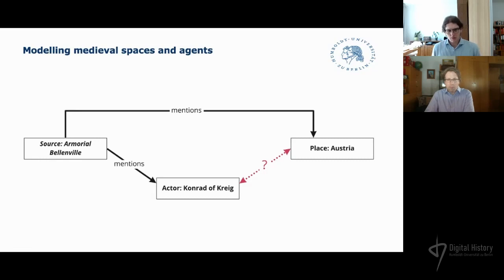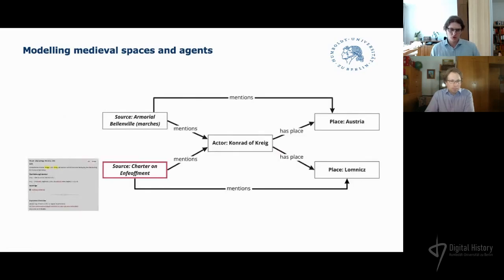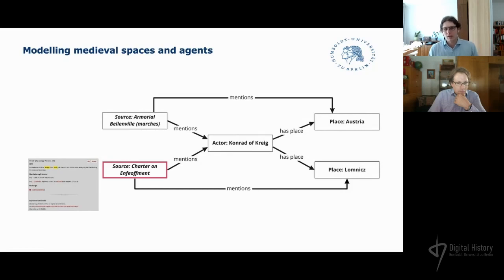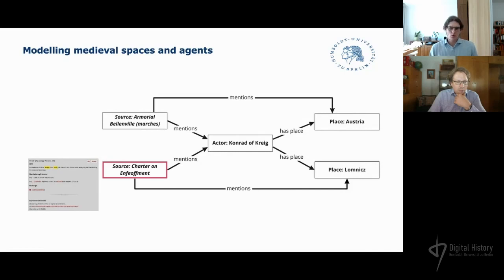Conrad of Kraig also appears in a charter from 1379, where he is granted Lomnič as a fiefdom from Wenceslaus IV. At this time, Wenceslaus was King of Bohemia as well as Roman-German king. Lomnič now lies in the north of Slovakia and was part of the Kingdom of Bohemia at the time. So Conrad of Kraig is to be associated with at least two different lords — King Wenceslaus and the Duke of Austria — which results in two different associated place entities.